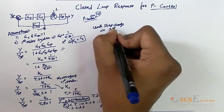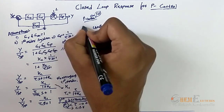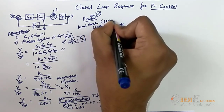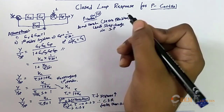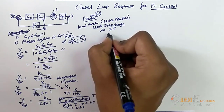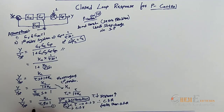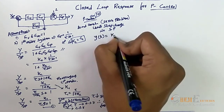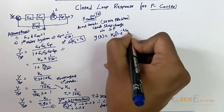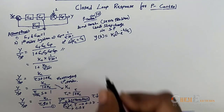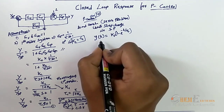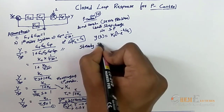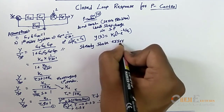Now taking a unit step change in setpoint — in this complete derivation the load is constant, so this is a servo problem. For a unit step change in setpoint, substituting into the equation, my output y(t) = K1 * (1 - e^(-t/tau1)), because it is a first order system.